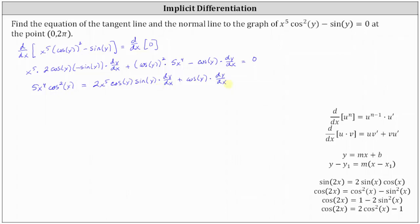Now we can factor out dy/dx on the right. So we have dy/dx times the quantity two x to the fifth cosine y sine y plus cosine y. Note we could perform a substitution here: two cosine y sine y equals sine two y using the double angle identity, but we'll leave it in this form for now. To solve for dy/dx, we divide both sides by two x to the fifth cosine y sine y plus cosine y.